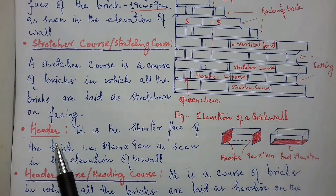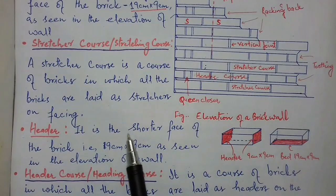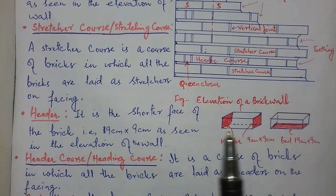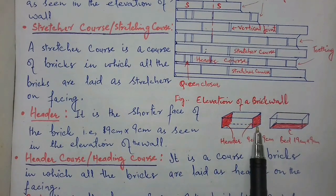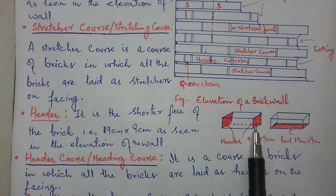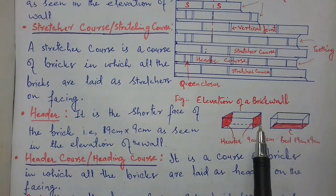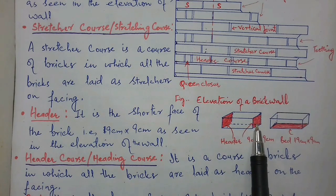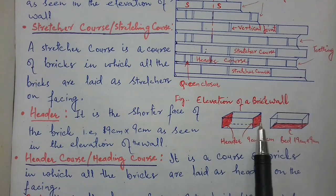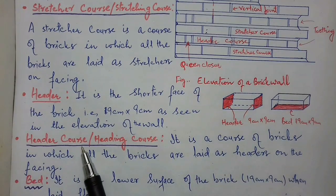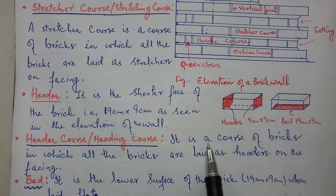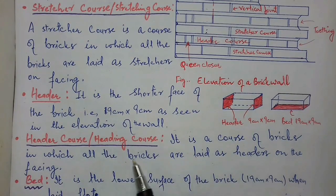Let's move to another term — header. Header is the shorter face of the brick. As shown in the diagram, this face of the brick which is shorter in dimension — 9 cm width and 9 cm thickness — is known as header.